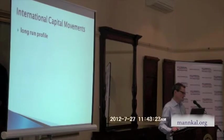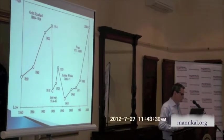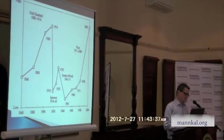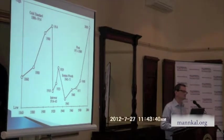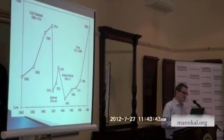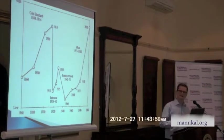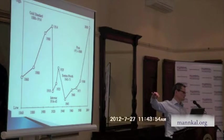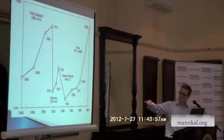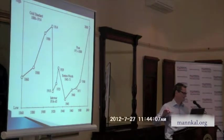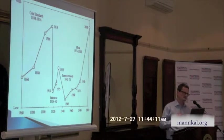Let's look at the long-run profile of international capital movements over roughly a century. This picture — produced by Morris Obstfeld and Alan Taylor — makes the strong assumption that you could measure the degree of capital movements across borders in a single variable, high versus low on the vertical axis, and years on the horizontal axis. Their empirical work tends to confirm the broad pattern of capital movements across borders, even though it's a highly stylised picture.